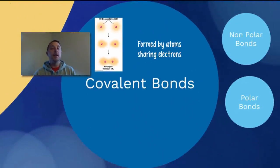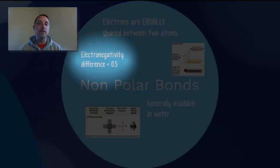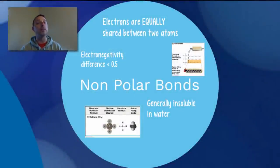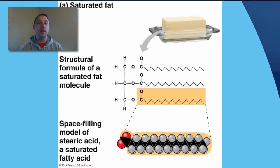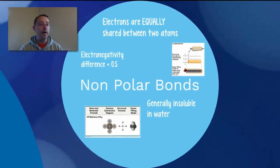Covalent bonds have two different types: nonpolar and polar covalent bonds. This again has to do with the electronegativity difference between the two atoms. If the electronegativity difference is very small or exactly the same, then we will have a nonpolar covalent bond, and in this type of bond the electrons are equally shared between the two atoms. An example of a nonpolar compound would be something like a fat — full of carbon-carbon and carbon-hydrogen bonds, all nonpolar. In general, these nonpolar compounds are insoluble in water; they will not dissolve.